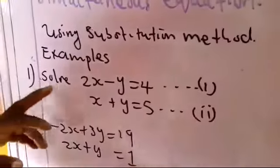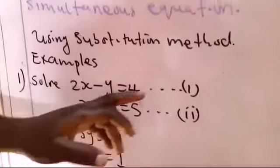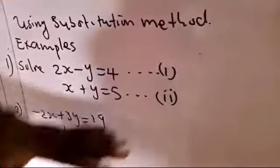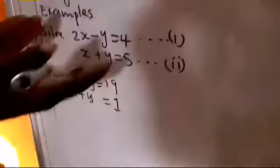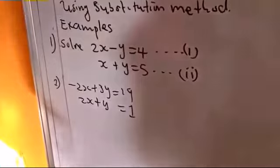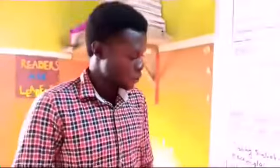Now, solve 2x - y = 4. This is first equation. x + y = 5. This is second equation. Usually, it's supposed to be just a single equation, but we are dealing with two different equations now. And that's what we call the simultaneous equation.